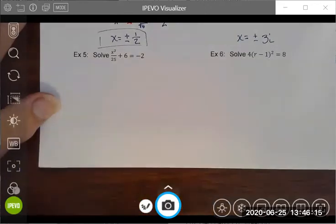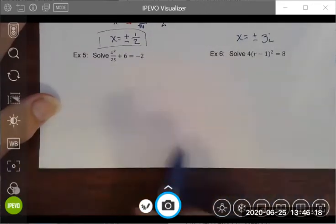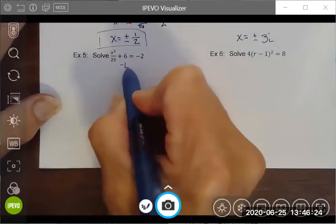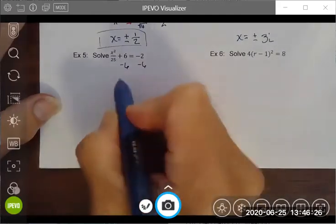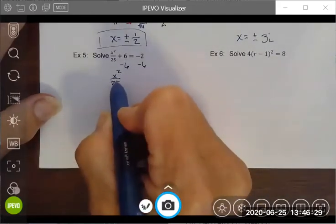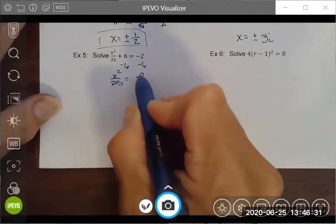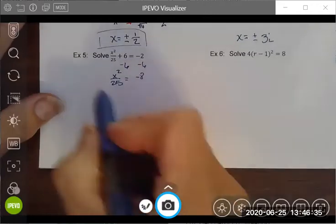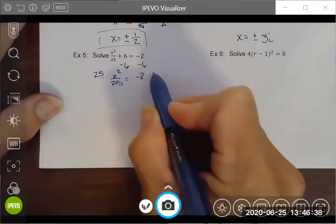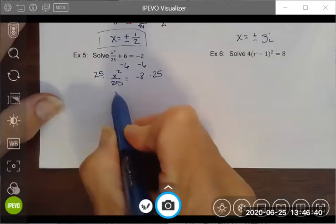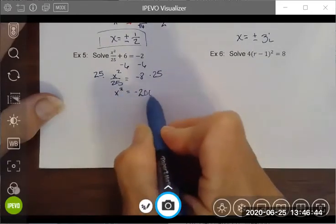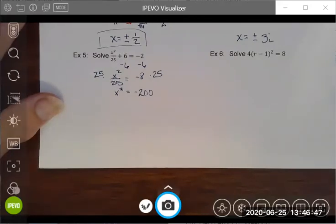Let's look at example five. This one involves two additional steps and it involves an imaginary number. First thing I'm going to do is isolate my variable. To undo dividing, I'm going to use the inverse operation, which is multiplication. I'm going to multiply both sides of my equation by 25.